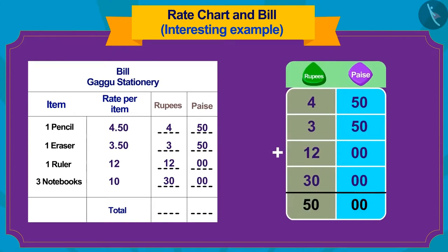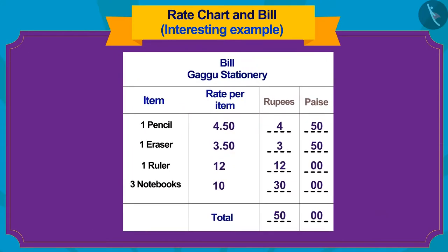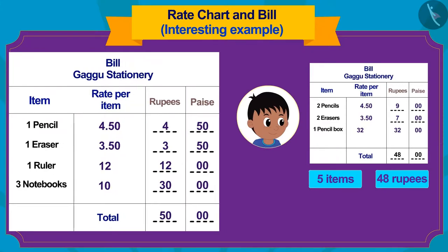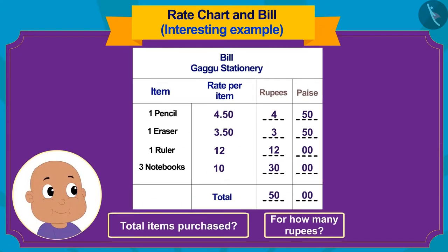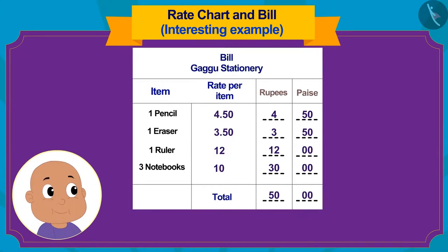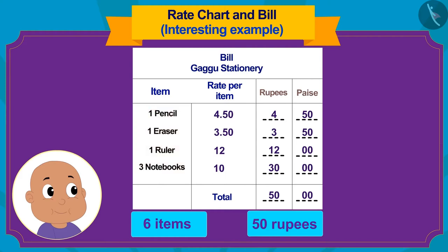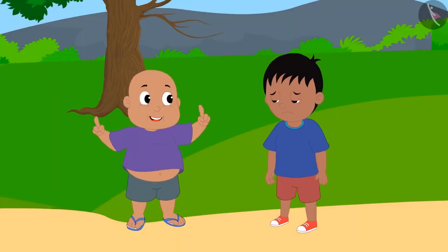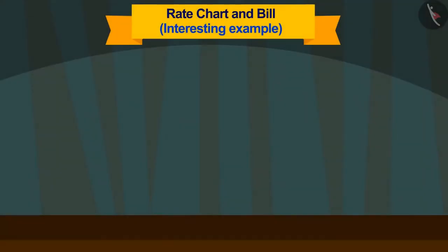Well done kids! You have done it perfectly! Raju bought a total of 5 items for 48 rupees. And how many items did Bablu buy for how many rupees? Yes! Bablu bought 6 items for 50 rupees. In this way, Bablu won the bet. And see how he is happily dancing!